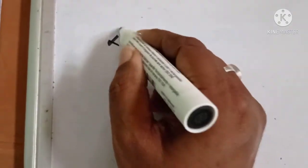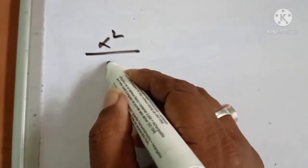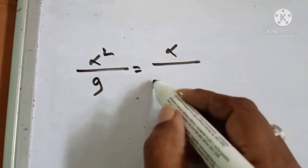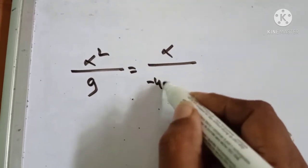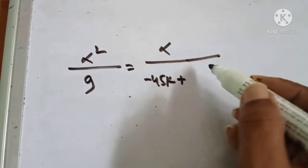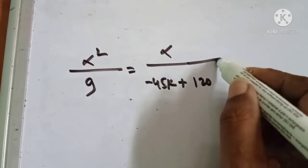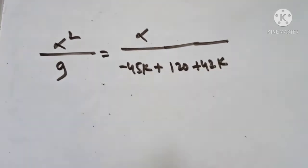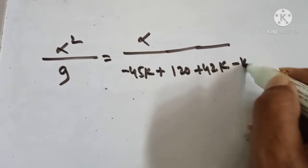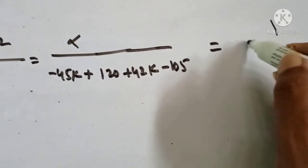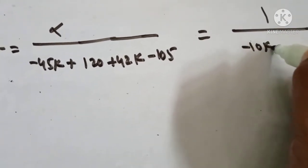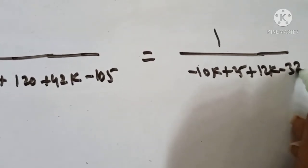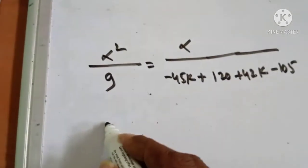Now alpha squared equals 84 minus 75, which is 9. And alpha equals: minus 45k plus 120 plus 42k minus 105, which simplifies to minus 3k plus 15. And the denominator is: minus 10k plus 25 plus 12k minus 32, which equals 2k minus 7.